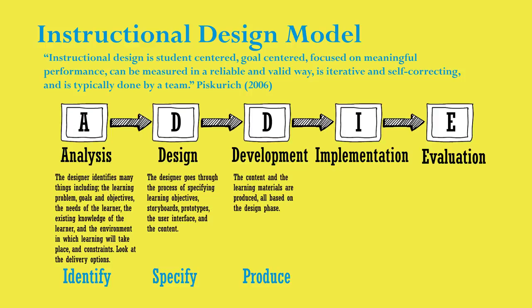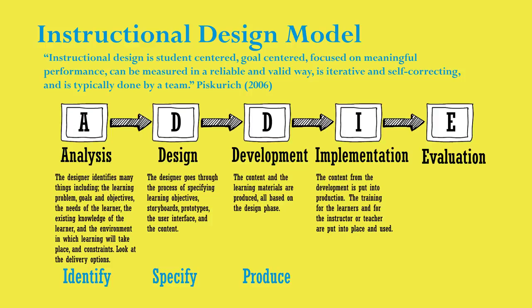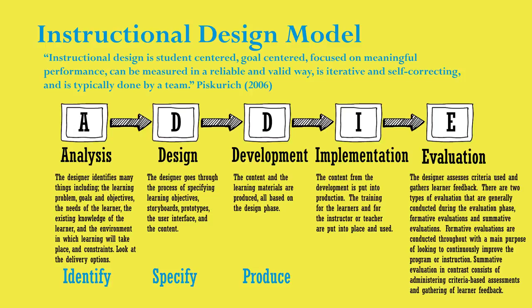During the fourth phase, the implementation phase, the content from the development is put into production. The training for the learners and for the instructor or teacher are put into place and used. During the final and fifth phase, the evaluation phase, the designer assesses criteria used and gathers learner feedback. There are two types of evaluation that are generally conducted during the evaluation phase: formative evaluations and summative evaluations.